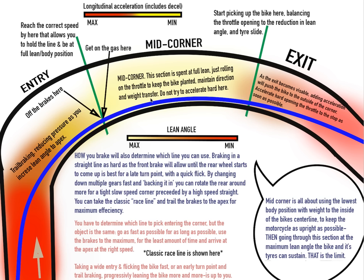This is maintenance throttle — just to keep the weight transfer going, to keep the bike holding its line. That's all you want to do. You get through it, and as soon as you get to the exit line, your goal changes. You're looking as far as possible at the exit, or depending on what's down there — if there's another corner, a chicane — you're looking at the exit and trying to drive out.